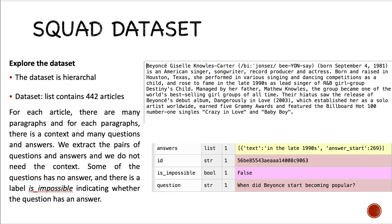The dataset is kind of hierarchical. It contains 442 articles, and for each article there are many paragraphs, and for each paragraph there is a context and many questions and answers to this specific context.